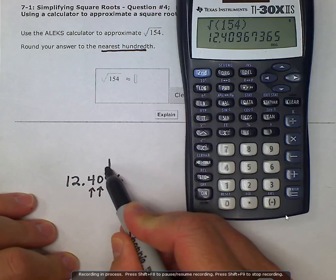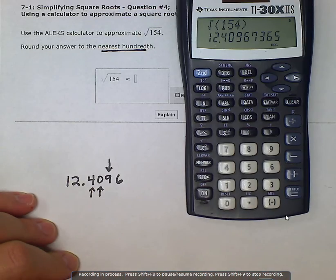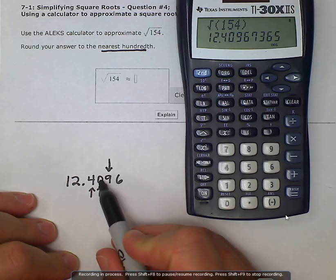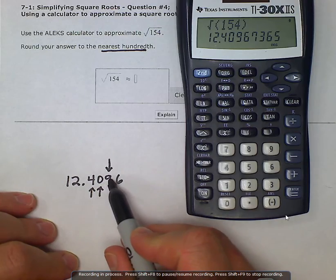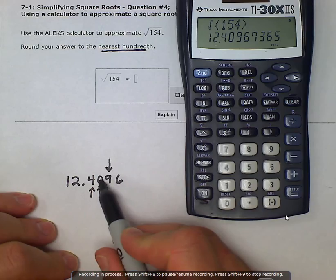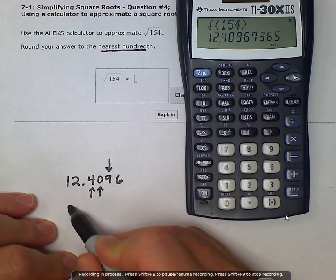If we're going to round to the nearest hundredth, we need to examine this third number after the decimal, and it tells us what's going to happen to the second one. Well, anything five and above, five through nine, is going to round this second place up one digit.